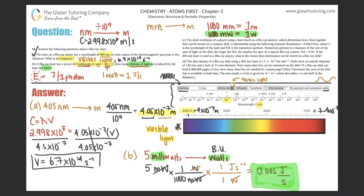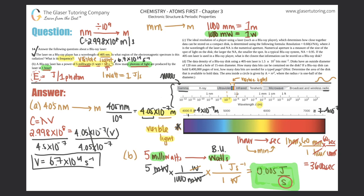They want photons produced in one hour, but I have joules per second, so I need to convert 1 hour into seconds. 1 hour × (60 minutes / 1 hour) × (60 seconds / 1 minute) = 3600 seconds.